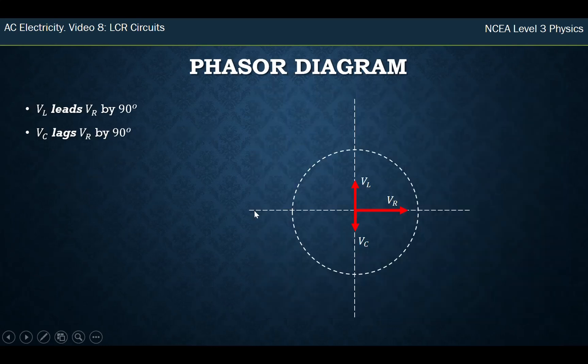So we've got our phasor diagram, and it's just a combination of the phasor diagrams that we had before. We've got our inductor leads by 90 degrees, and we always do the voltage of the resistor out to the right, and we've got the capacitor lags by 90 degrees, because remember, everything turns anti-clockwise.